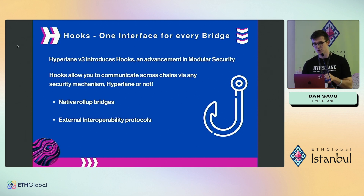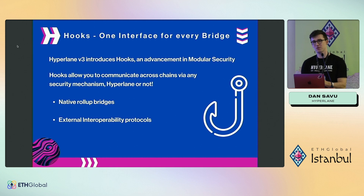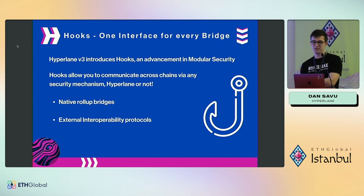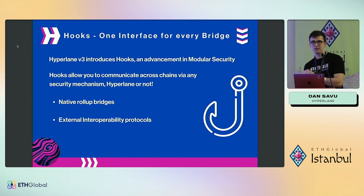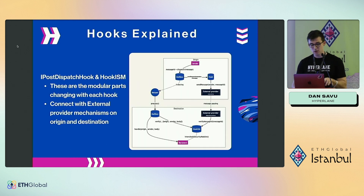We've very recently released Hyperlane v3, which introduces hooks — what we believe is the ultimate form of interoperability UX. Hooks allow you to pass messages cross-chain not only via Hyperlane but also via any bridge provider out there, be it native rollup bridges or external interoperability protocols. You just select the hook you want to use when a message is dispatched, and the message is routed through that external bridge provider, rollup, or Hyperlane security module.